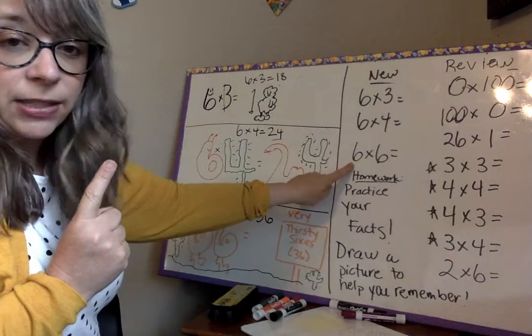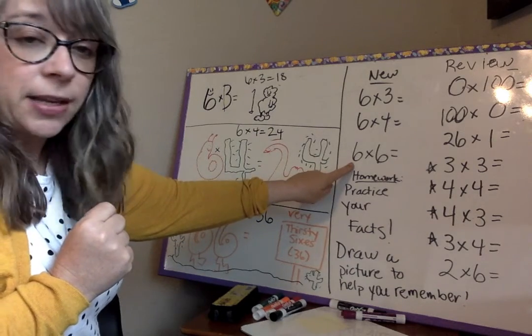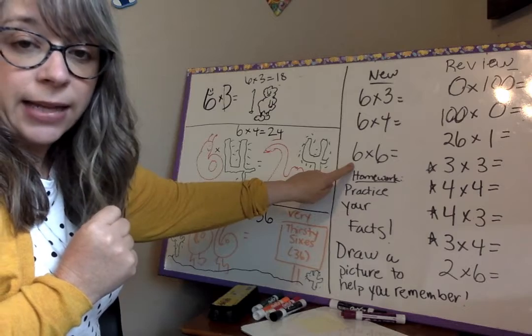If you know 6 times 5 is 30, you're going to know that 6 times 6 is 36. We're just adding 6 more to 30.